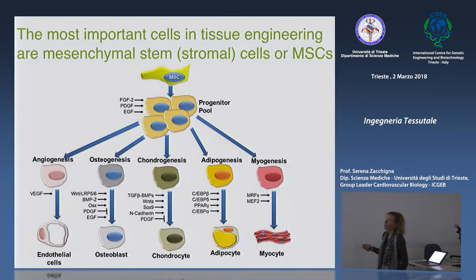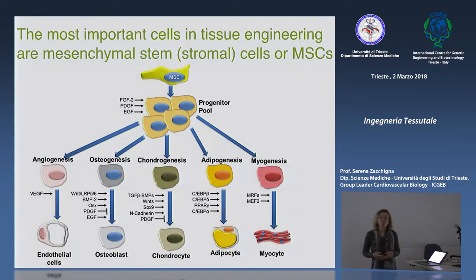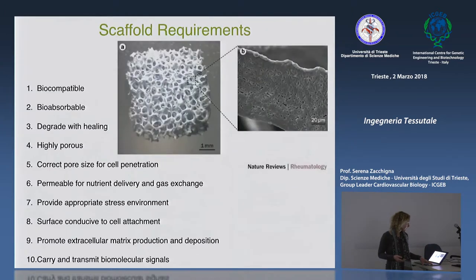Ci sono forzature sperimentali per cui in vitro possono essere utilizzate per fare cellule vascolari, cellule muscolari o cardiomiociti, ma si tratta chiaramente di forzature in coltura che non hanno ancora portato a nessun beneficio terapeutico.